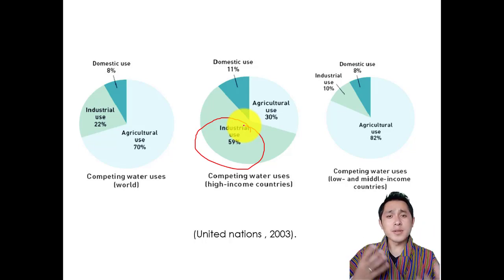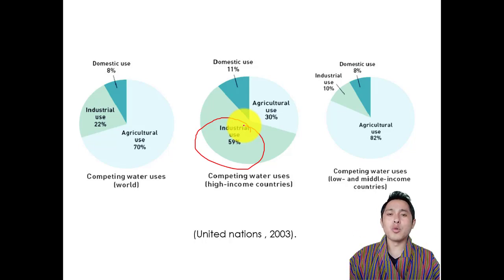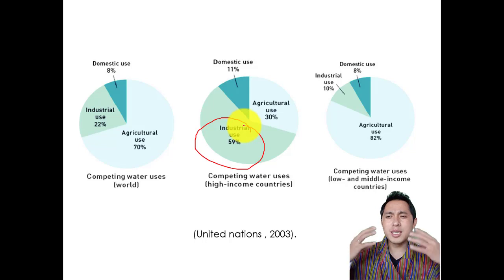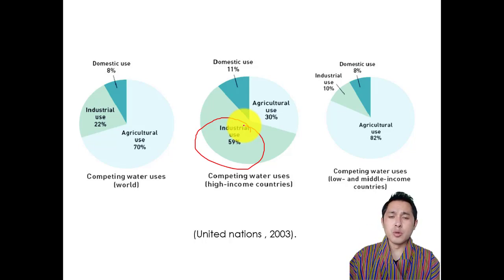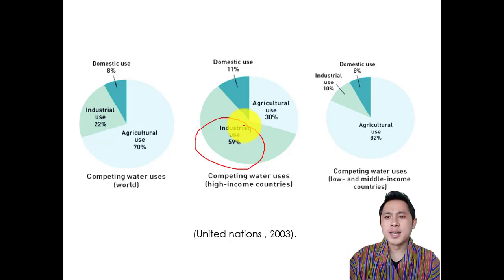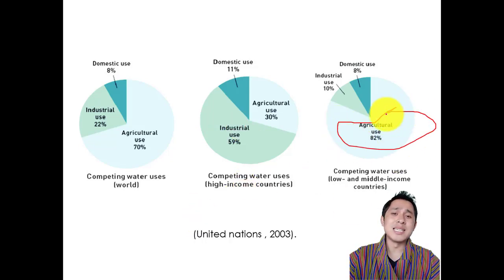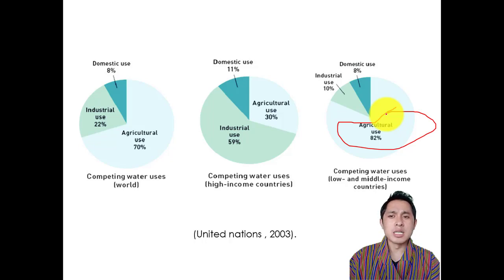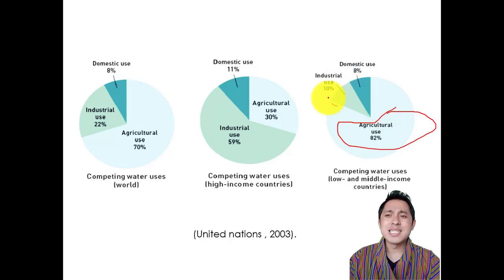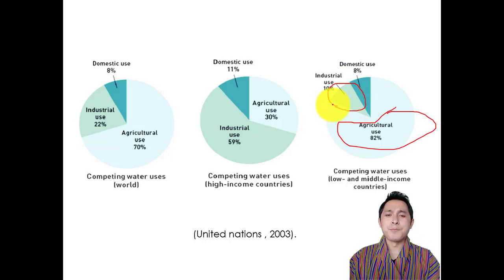Other technologies like oil refineries also need lots of water. Because of this, large amounts of water are used for industrial purposes. In developing or underdeveloped countries, more water goes to agriculture — around 10 percent is allocated to industrial purposes because there are not many water-intensive industries.